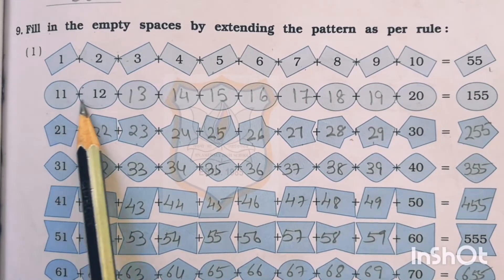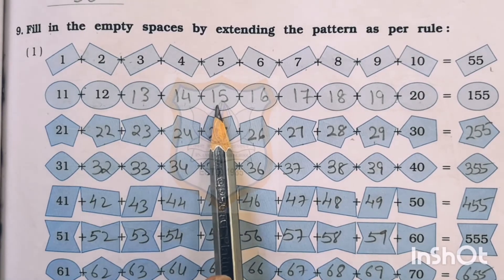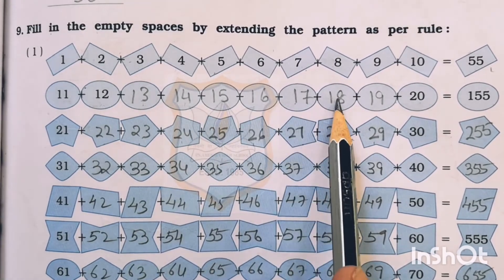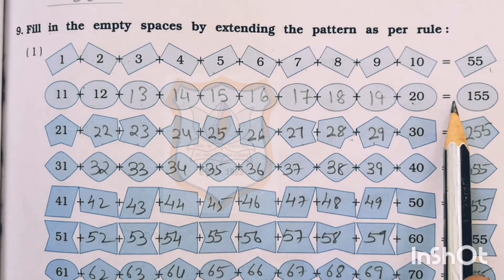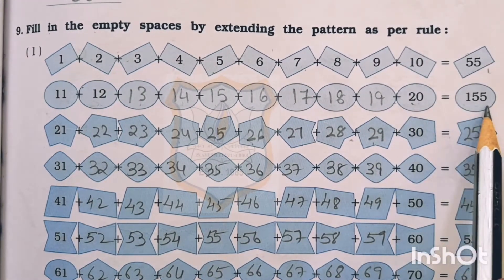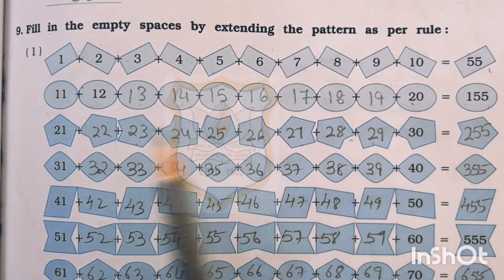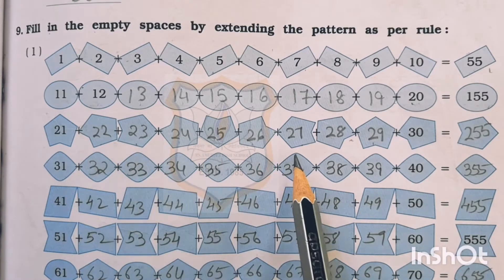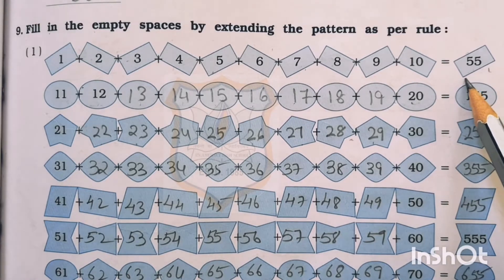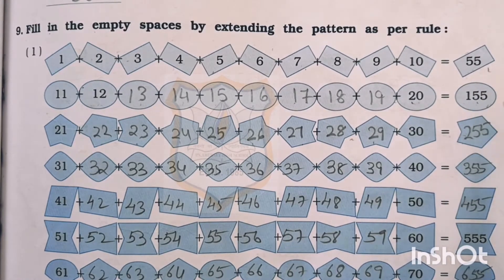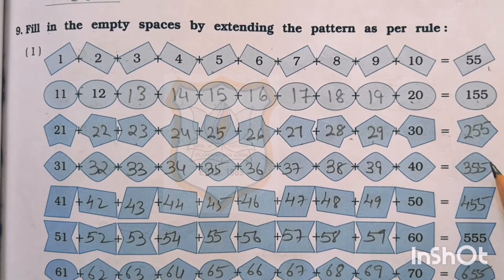Then 11 plus 12 plus 13 plus 14 plus 15 plus 16 plus 17 plus 18 plus 19 plus 20 — if we add all these numbers, we will get 155 as the answer. In the same way, we have to write down the missing numbers and then add them. We will get 55, then 155, then 255 and then 355 and so on. The remaining part of question number 9 first part, you have to do by yourself.